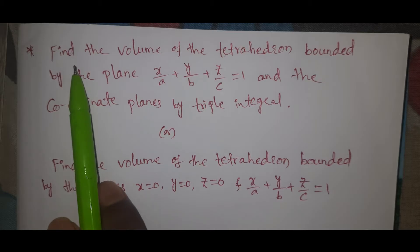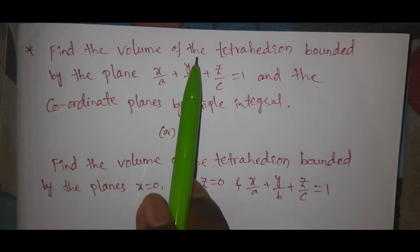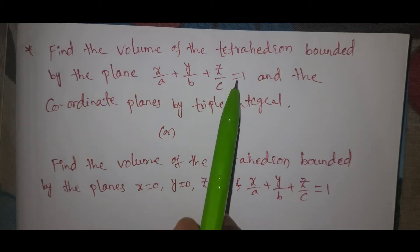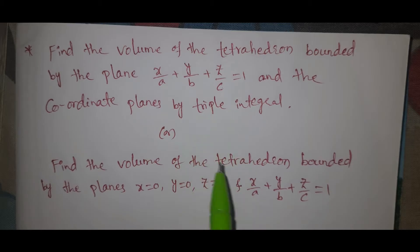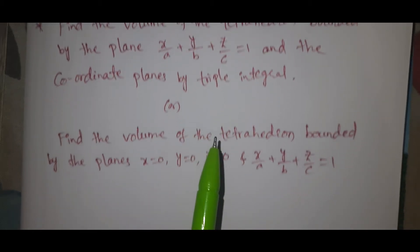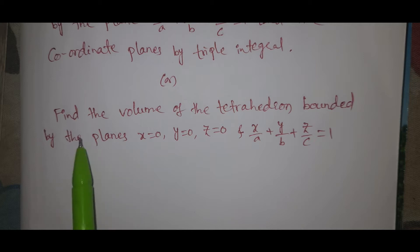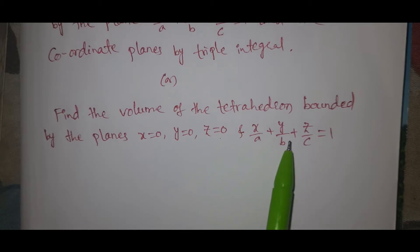This question has appeared in the last two years of exams. Find the volume of the tetrahedron bounded by the plane x/a + y/b + z/c = 1 and the coordinate planes by triple integral. The second question: find the volume of the tetrahedron bounded by the planes x = 0, y = 0, z = 0, and x/a + y/b + z/c = 1.